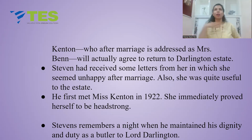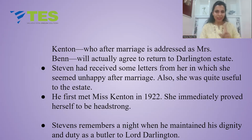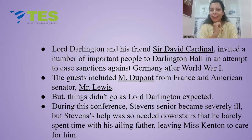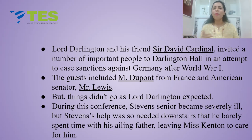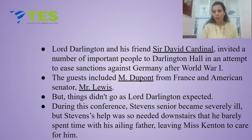Stevens is on the road trip, remembering things. He remembers a night when he maintained his dignity and duty as a butler to Lord Darlington. Lord Darlington and his friend Sir David Cardinal invited a number of important people to Darlington Hall in an attempt to ease sanctions against Germany after World War I. This was an unofficial meeting. The important guests were M. Dupont from France and an American senator named Mr. Lewis.